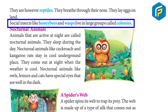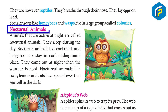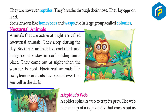Social insects like honeybees and wasps live in large groups called colonies. Animals that are active at night are called nocturnal animals — they sleep during the day. Nocturnal animals like cockroaches and kangaroos stay in cool underground places and come out at night when the weather is cool. Nocturnal animals like owls, lemurs, and cats have specialized eyes that see well in the dark.